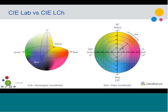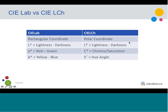Chroma — the saturation — is measured as a distance from the center of the axis out to wherever the color plots. Both CIE LAB and LCH are three-coordinate systems. The lightness numbers are exactly the same between them. To communicate hue and saturation, with CIE LAB we use the A star and B star axes, while with LCH we use the chroma factor and the hue angle.